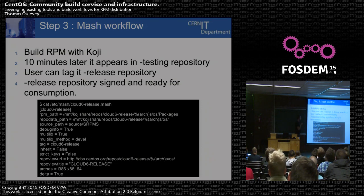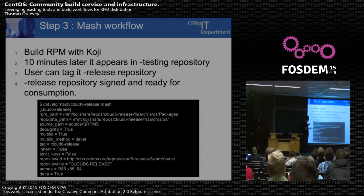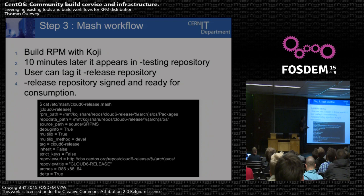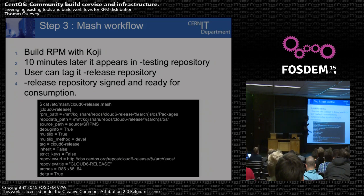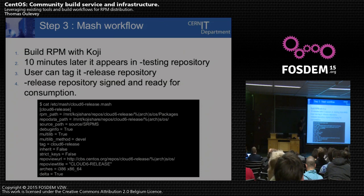In MASH, you define a target and then have different options. The important ones are: whether you want debug info packages, whether you want multilib packages, and you associate the Koji tag — so all the builds tagged in, for example, Cloud7-release will be taken for this repository. You can check the GPG key if you want. You can specify architecture if you want only one arch — for example, for CentOS 7 you might have only x86_64. You can also generate delta RPMs if needed.